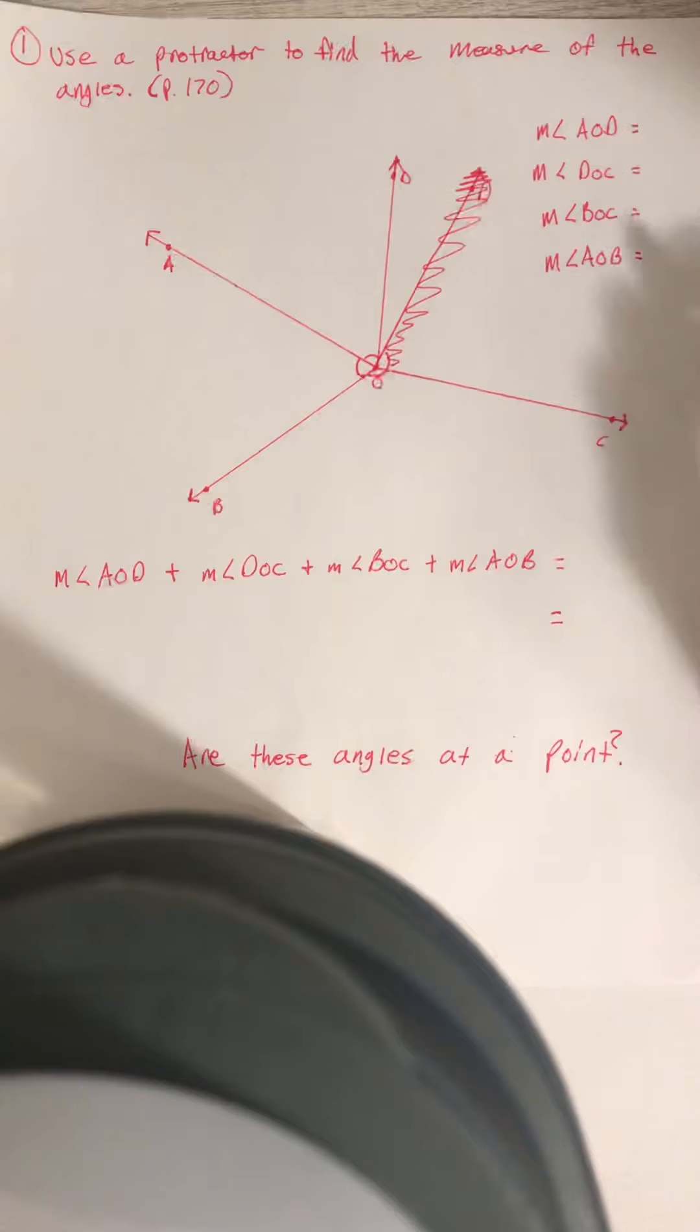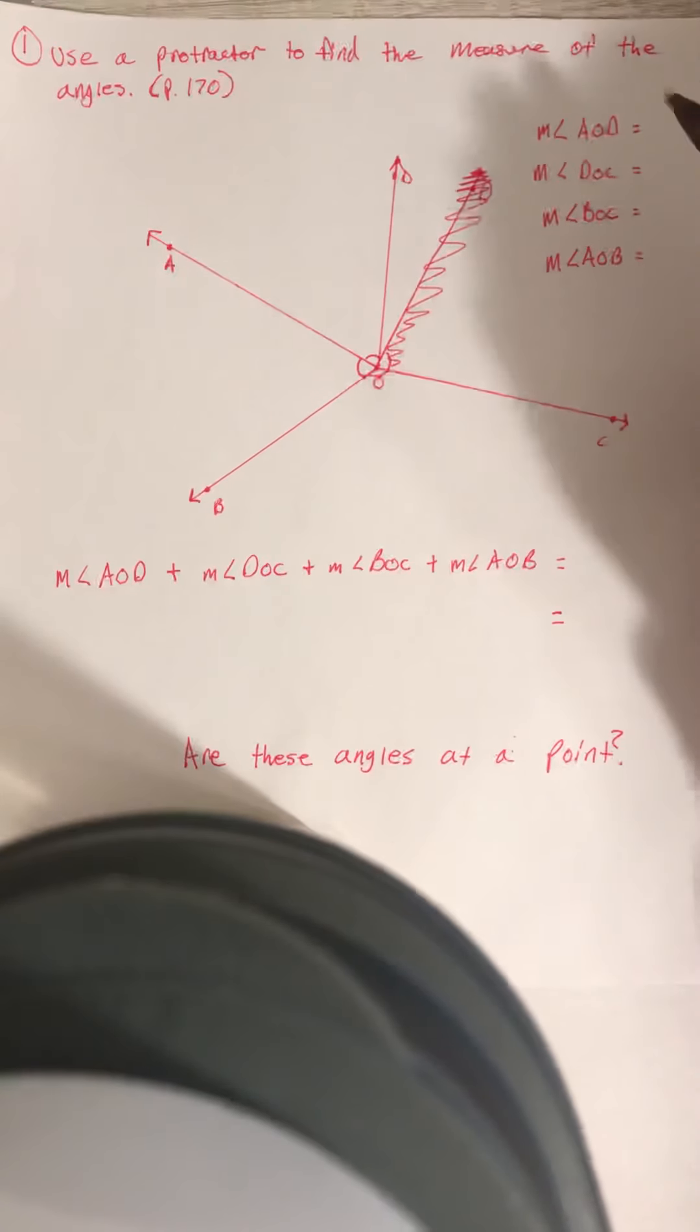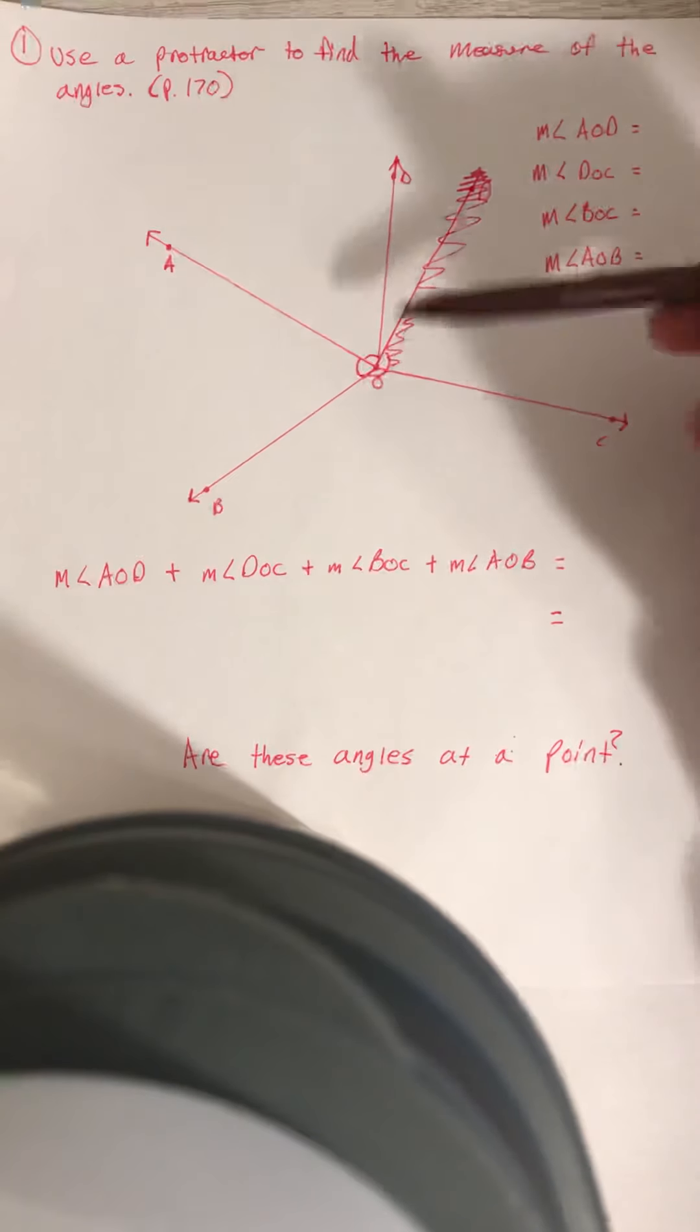So the question for number one says, use a protractor to find the measure of the angles. If you notice, our angles here are a little bit different than on 12.1. On 12.1, we had straight lines, and we were measuring the angles off of straight lines. In this section, we do not have lines, we have rays.